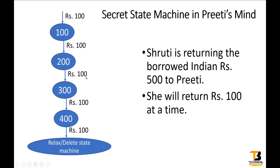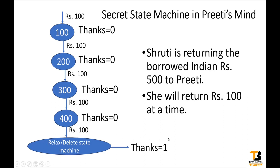Now when another 100 rupees is given, it will move to another state — let us name it as 300. State 300 means Shruti has already paid 300 rupees. When again 100 rupees is given, it will move to the next state which is 400. State 400 reminds Preeti that Shruti has already paid 400 rupees. When another 100 rupees is paid, it will come to the last state where Preeti will relax and say thank you to her friend Shruti. If I consider thanks as a variable, the thanks variable will become 1 in the last state, but it was 0 for all the other states.